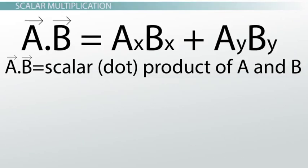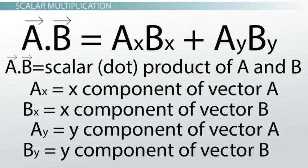But what if you're given a quantity in component form? Maybe you don't know the overall magnitude of the vector, but you do know the x and y components of a, and the x and y components of b. In that case, you would use the component form equation, and it works out exactly the same. Just multiply the two x components together, and the two y components, and if you were in three dimensions, also the two z components, then add them all up.